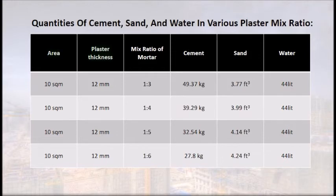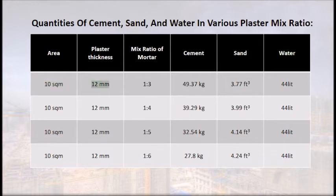Quantities of cement and water in various plaster mix ratios: for an area of 10 sqm at 12 mm thickness, a 1:3 mix requires 49.37 kg of cement, 3.77 cubic feet of sand, and 44 litres of water.